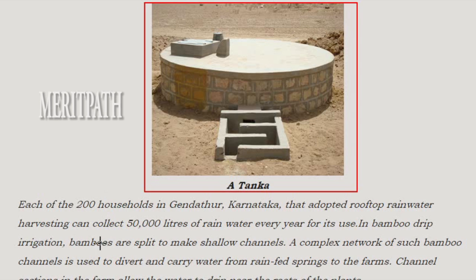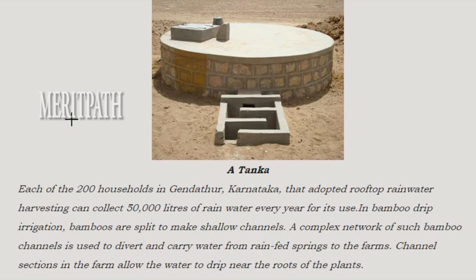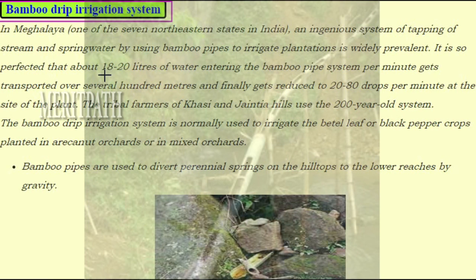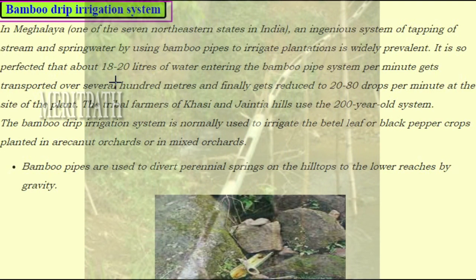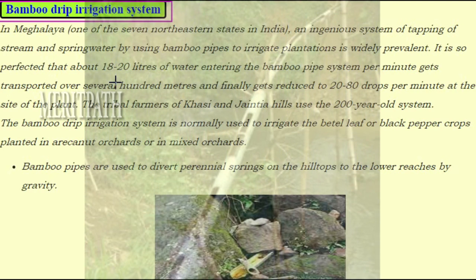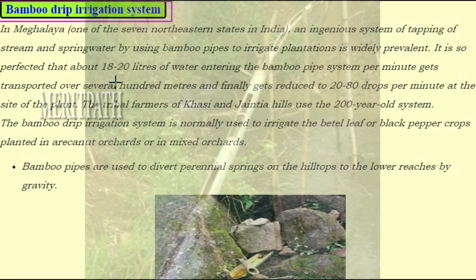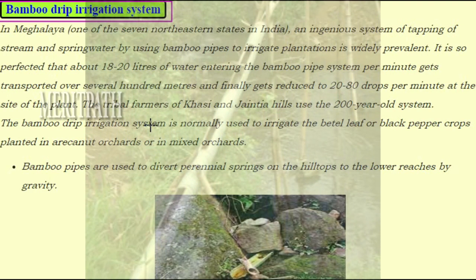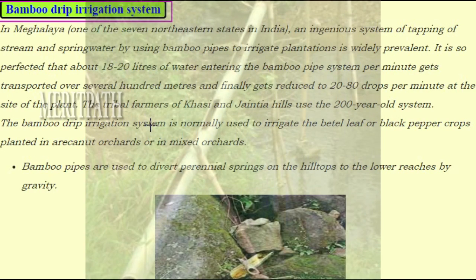In bamboo drip irrigation, bamboos are split to make shallow channels. A complex network of bamboo channels is used to divert and carry water from rain-fed springs to the farm. Channel sections in the farm allow water to drip near the roots of the plants. This system is widely prevalent in Meghalaya, one of the seven northeastern states of India. It is so perfected that about 18 to 20 liters of water entering the bamboo pipe system per minute gets transported over several hundred meters and finally reduced to 20 to 80 drops per minute at the site of the plant. The tribal farmers of Khasi and Jaintia hills use this 200-year-old system to irrigate betel leaf or black pepper crops planted in areca nut orchards or mixed orchards.